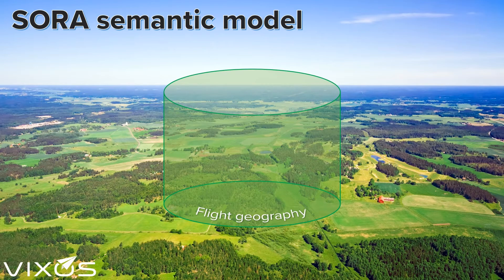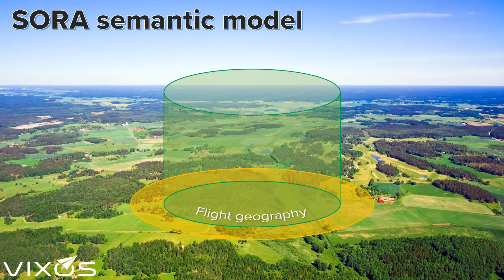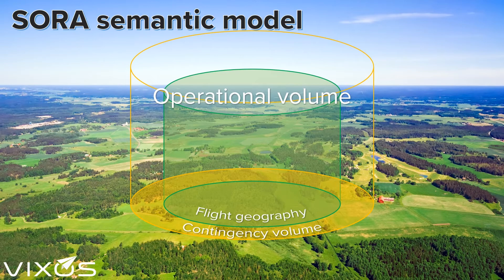To allow for glitches in your operation — such as loss of GPS, using the wrong flight path, or the pilot falling asleep — there is an additional area around your flight geography, and this too has an altitude limit, making it a volume. This bigger volume is called the contingency volume and it completely surrounds the flight geography. These two volumes together are called the operational volume.